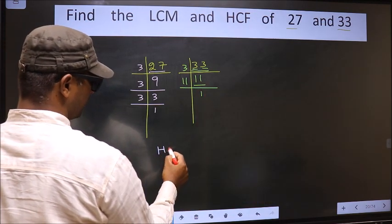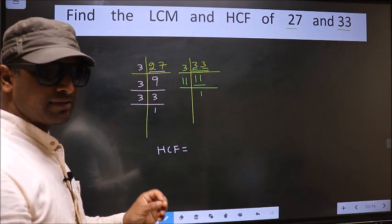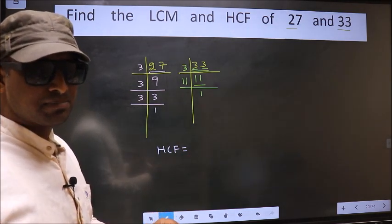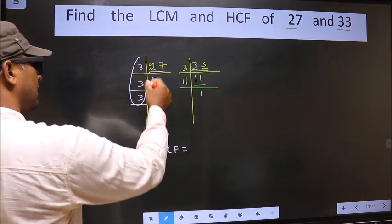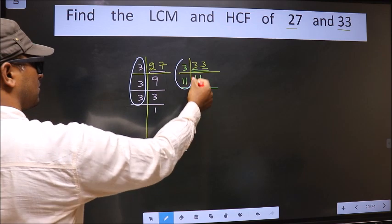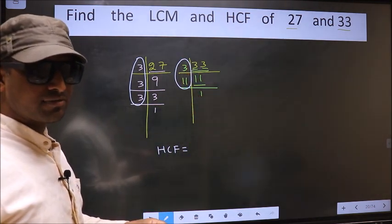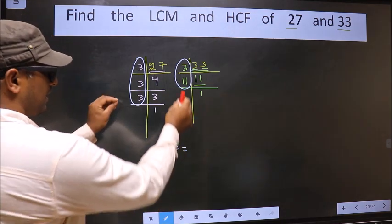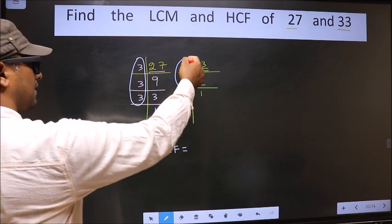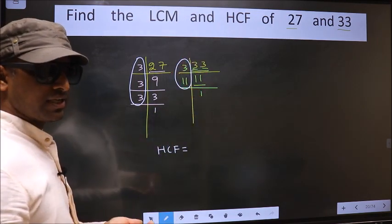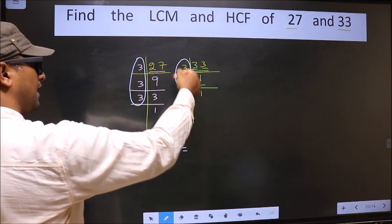So our HCF is the product of numbers which should be present over here and also here. I repeat, HCF is the product of numbers which should be present in these two places. Here and here. So now, let us find the numbers which are present here and here.